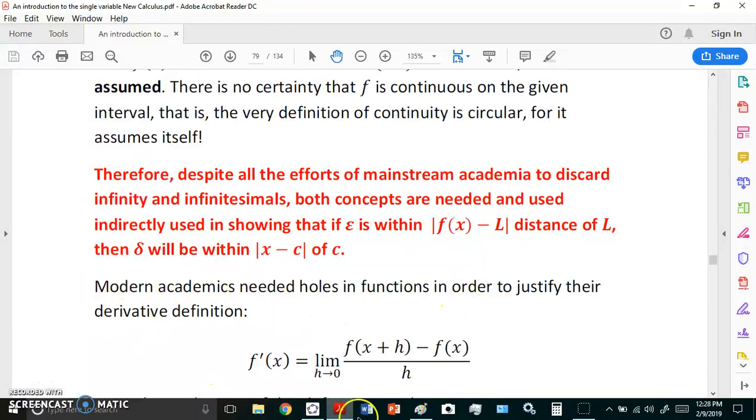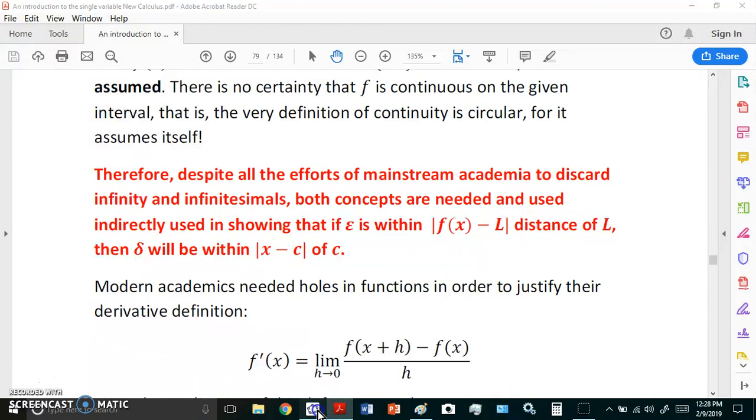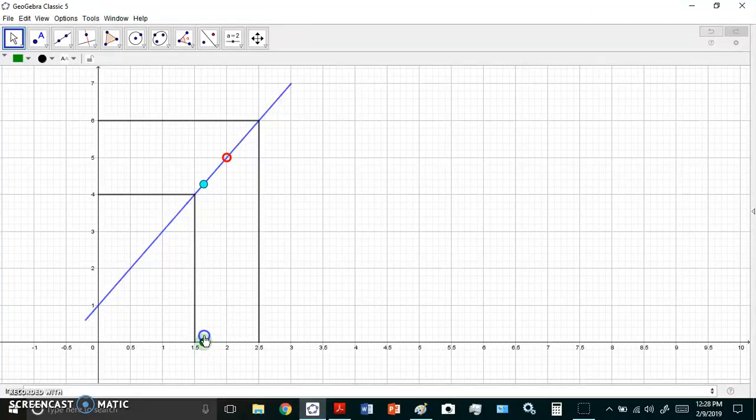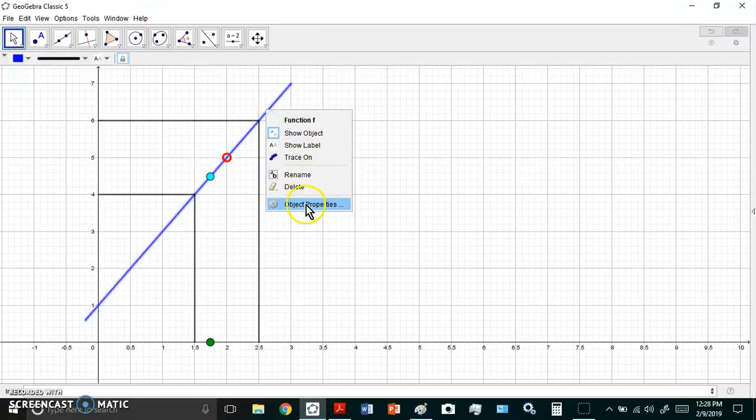So now I'm going to show you very quickly in an applet that if we, for example, have this same function that I showed you, this is what is meant that you can get closer and closer to the point without actually getting to the point. When you get to the point, it's not defined there. And as you can see here, I've defined most of these points, but now I'm going to undefine this point here, 1.6. Watch me do that. I'm going to undefine 1.6 very quickly.